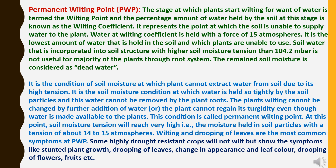At the permanent wilting point, water is held so tightly by the soil particles that it cannot be removed by plant roots. The plant's wilting cannot be reversed by further addition of water — the plant cannot regain its turgor even though available water is given. At this point, soil moisture tension reaches very high levels, with moisture held at a tension of about 14 to 15 atmospheres. Wilting and drooping of leaves are the most common symptoms. Some highly drought-resistant crops will not wilt but show symptoms like stunted growth, drooping of leaves, change in leaf color, and drooping of flowers and fruits.